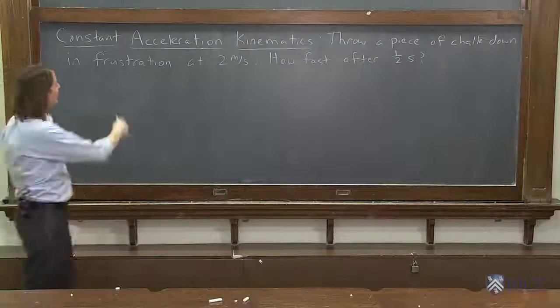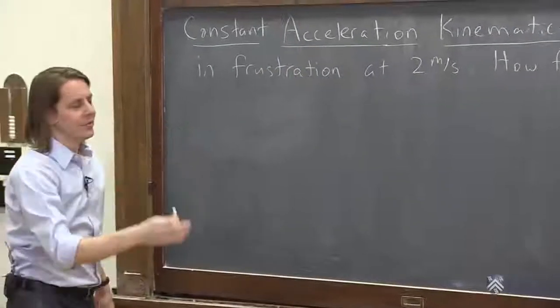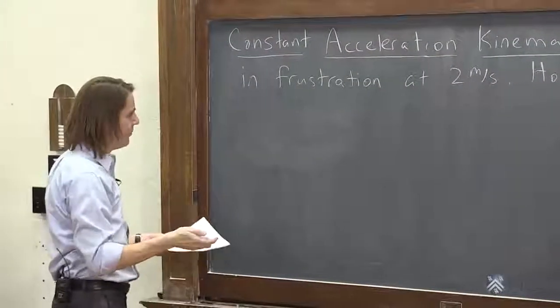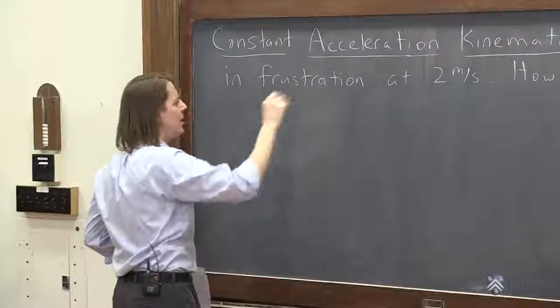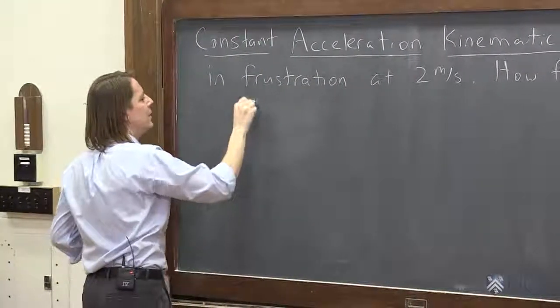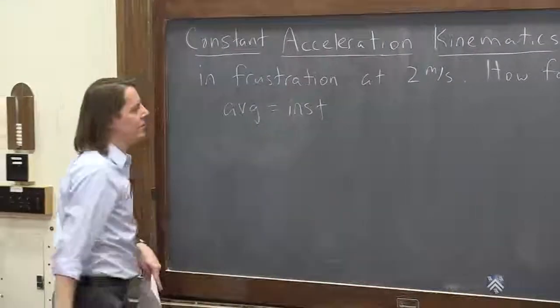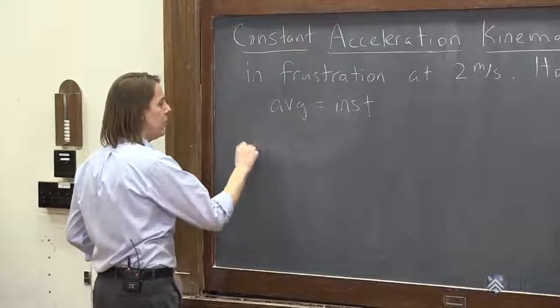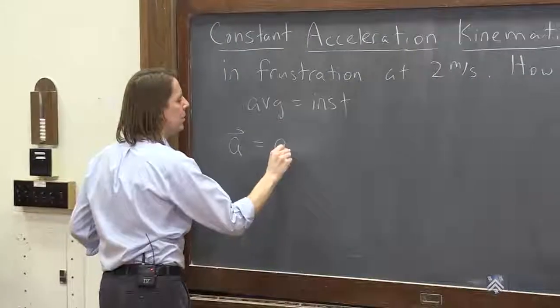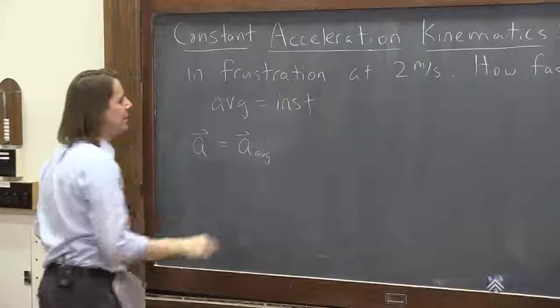So the way we would do this is derive some kinematics from our definitions, and it's going to be just like before. We're going to assume that if everything is constant, if the acceleration is constant, then the average value equals the instantaneous value.